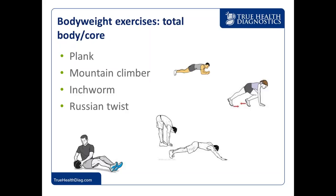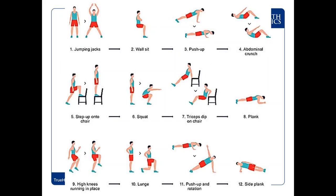For the total body core, the core isn't just the six-pack abs — it goes all the way around to the back to stabilize the spine. Exercises include a plank on forearms and toes, mountain climbers, the inchworm — where you bend over, walk your hands out, then walk them back — and the Russian twist. A sample body weight workout puts it all together: jumping jacks, wall sit, push-ups, abdominal crunch, and step-ups on a chair.